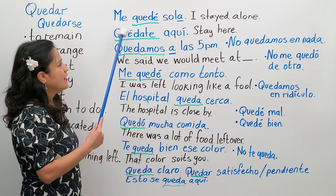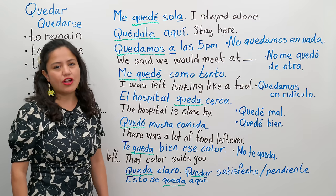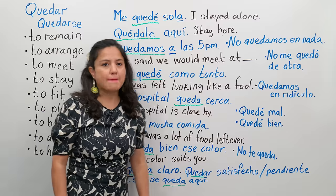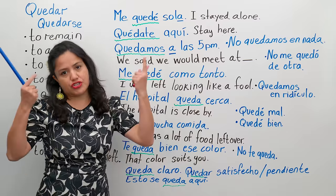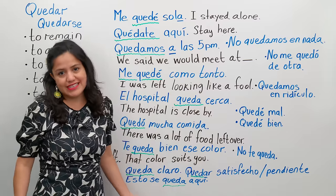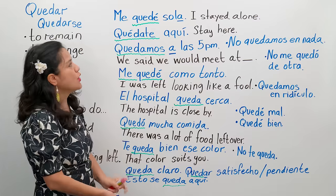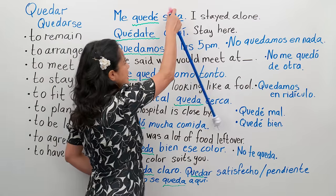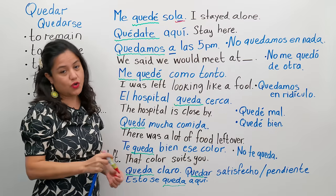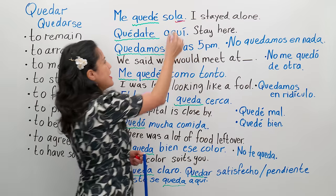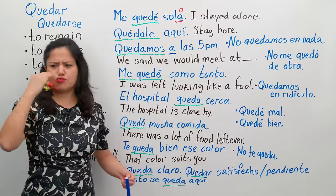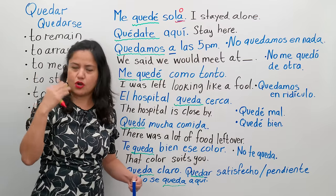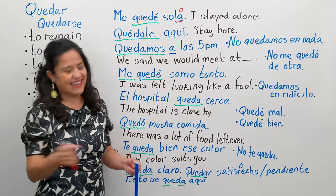Quiero decir — me quedé sola. Me quedé sola. Sola because I'm Ana, una muchacha. But if I were Pedro with a mustache, I could say me quedé solo — with an O. So it can be sola or solo. If I'm Pedro with my mustache, me quedé solo. But I'm Ana with my flores — me quedé sola.